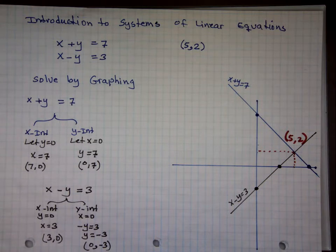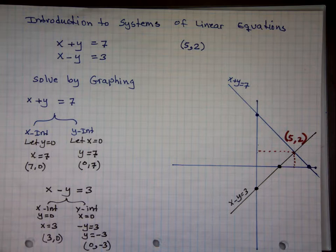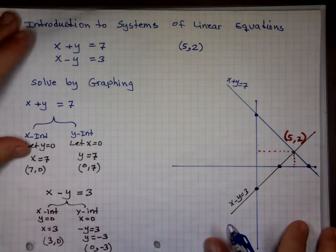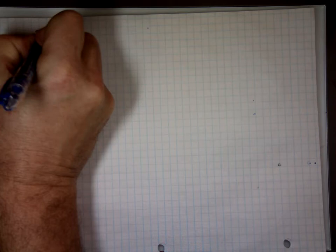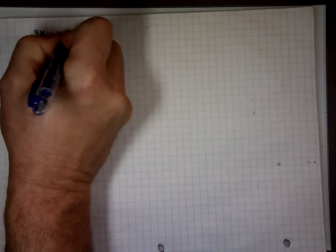Let's try another one. The first equation is 3x minus y equals 2, and the other equation is 3x minus y equals 4. Find the solution.